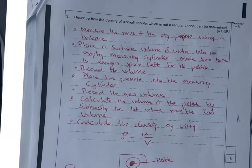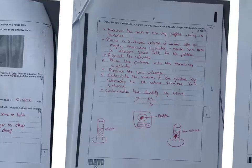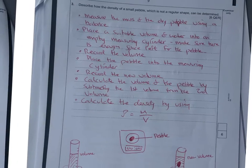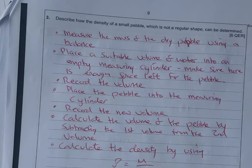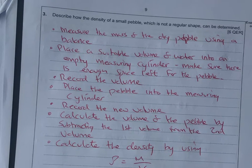On to question three, which is a six marker. It's all about one of the specified practicals where we're measuring the density of a regular shaped object. A small pebble, not a regular shaped object. The first thing you do is measure the mass of the dry pebble. That's the easy mark. You're going to stick that on a balance to get your mass and then record that.